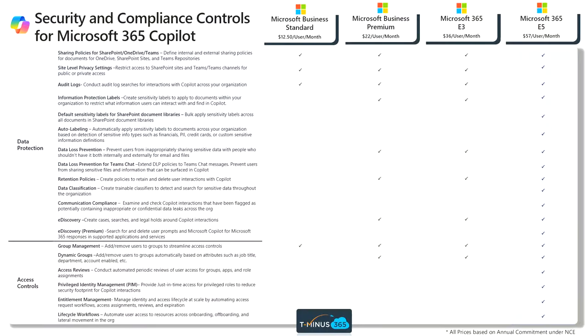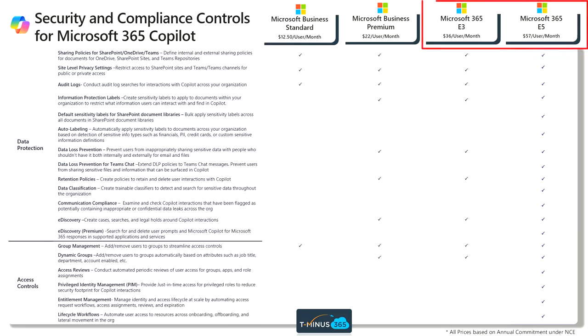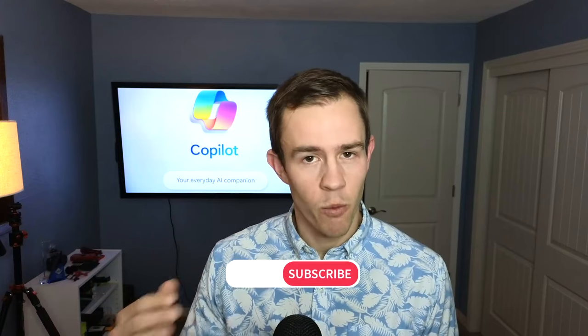In this video, I'm going to go through a comparison of both the business-related security compliance features that are part of that licensing model, as well as the enterprise features. So you can do a clear comparison of what you're getting with both and the protections on both sides, as well as the pricing considerations. It's going to be a demo-heavy video. I'm going to give a high-level demo of each of these features. If you haven't already subscribed, definitely subscribe to the channel to see more about Copilot and Microsoft 365 in general. Let's dive in.